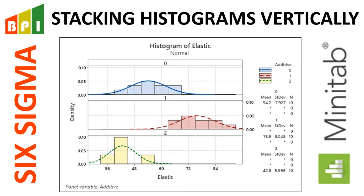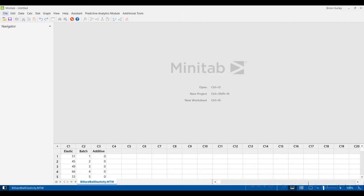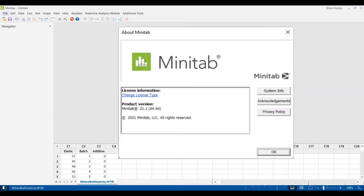The data set I'm using is out of Minitab — it's the billiard ball elasticity data, and I'll post a link in the notes for this video where you can download that file. I'm using Minitab 21, but you should be able to use this feature in past versions of Minitab and probably future versions.